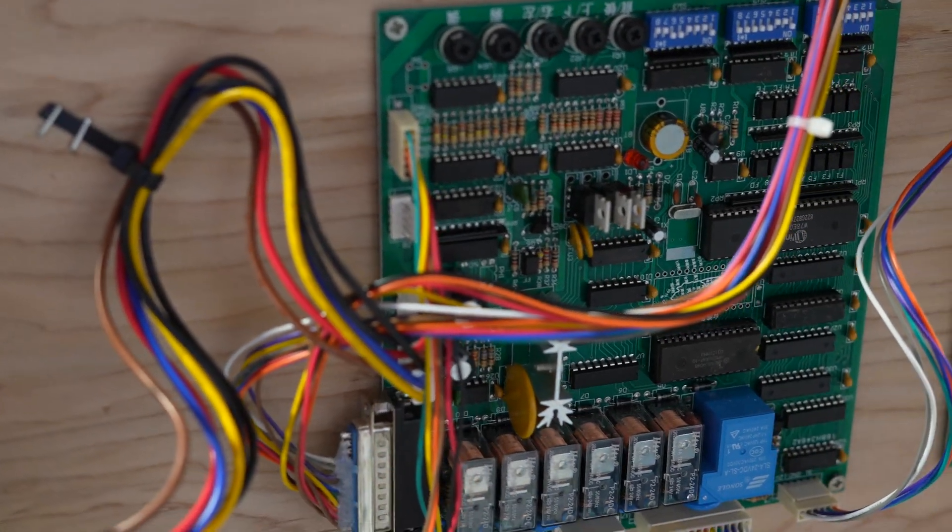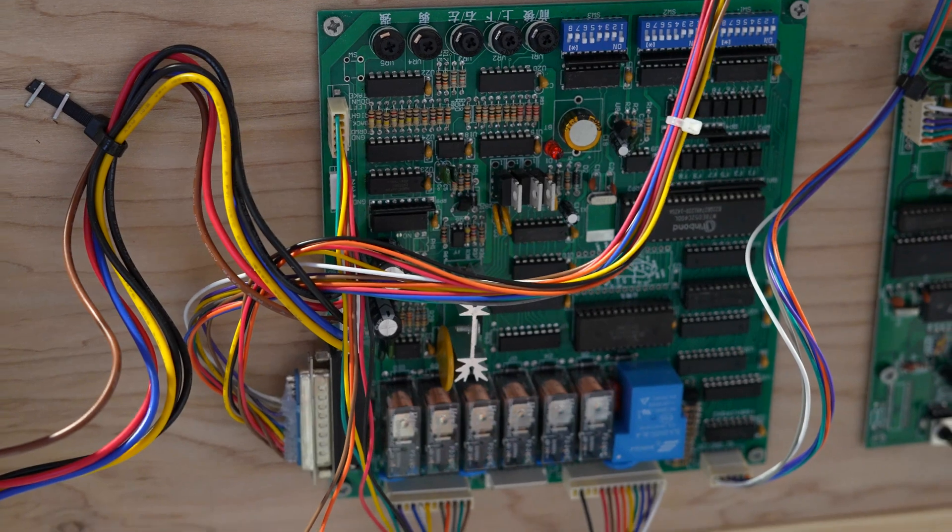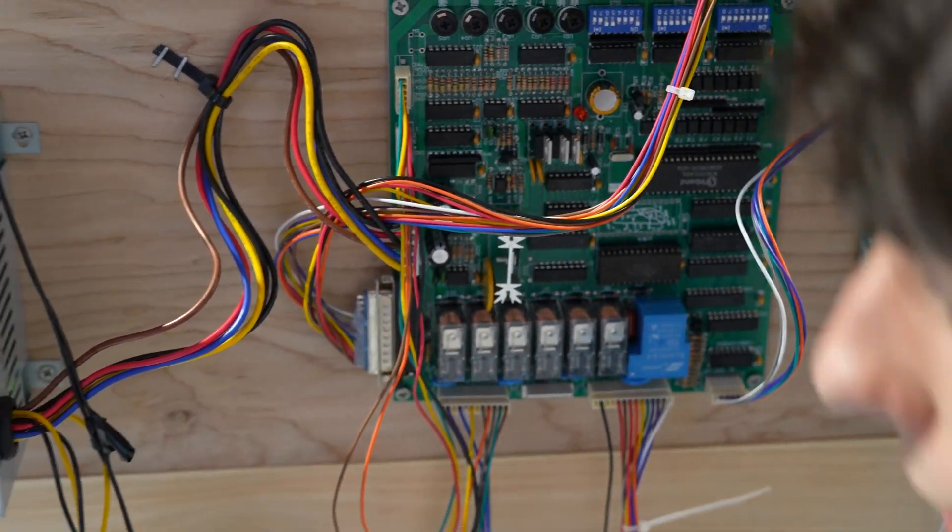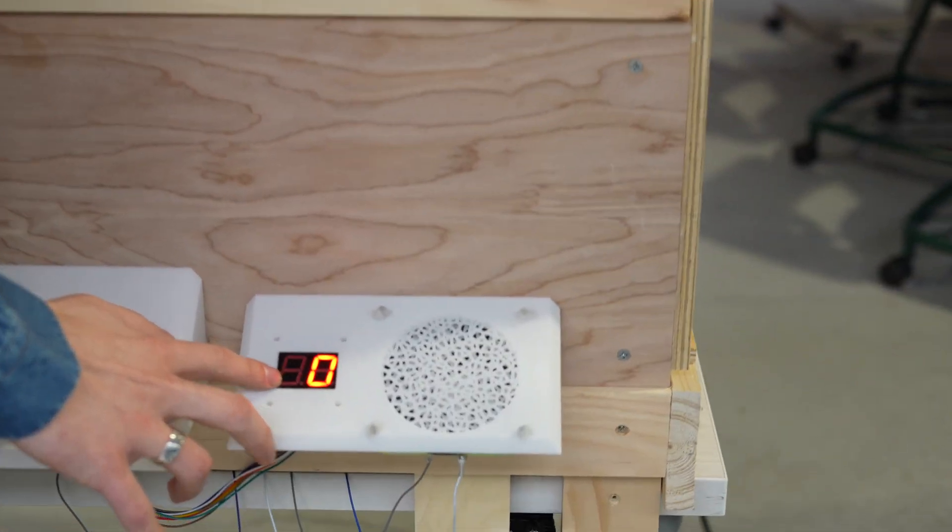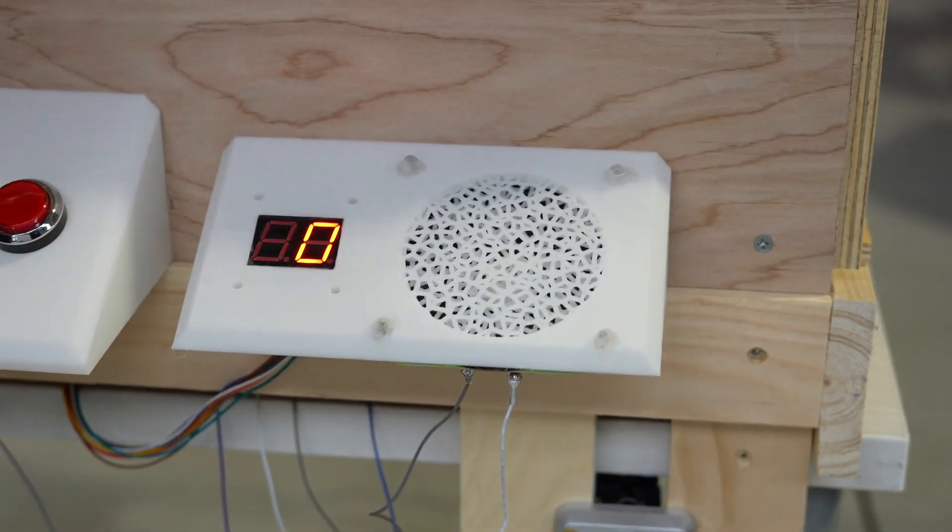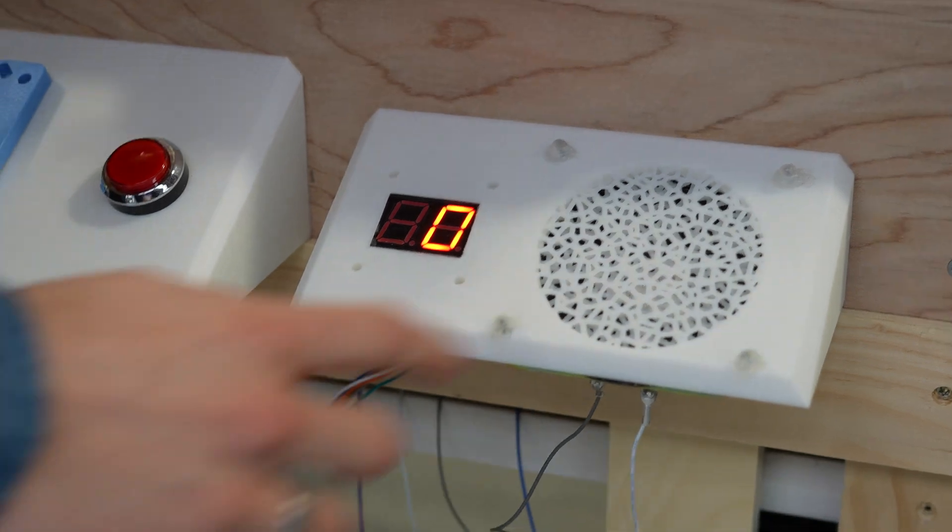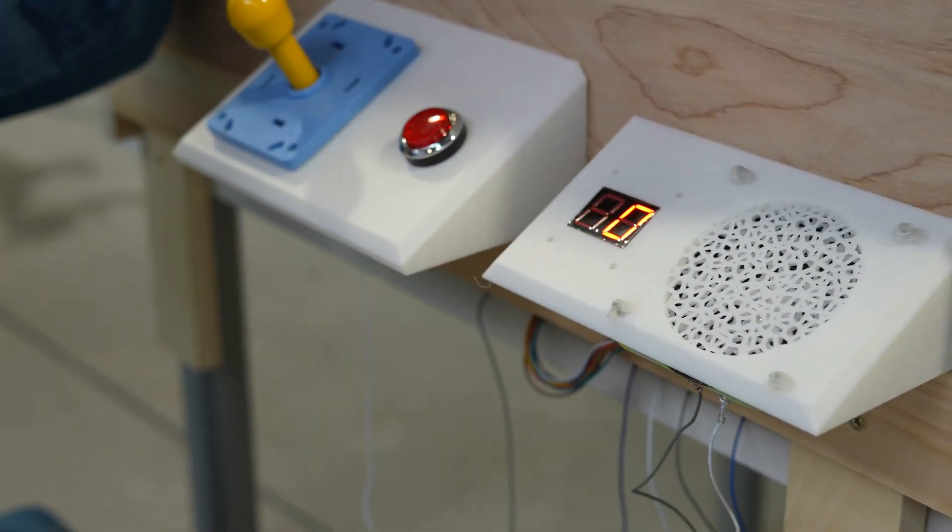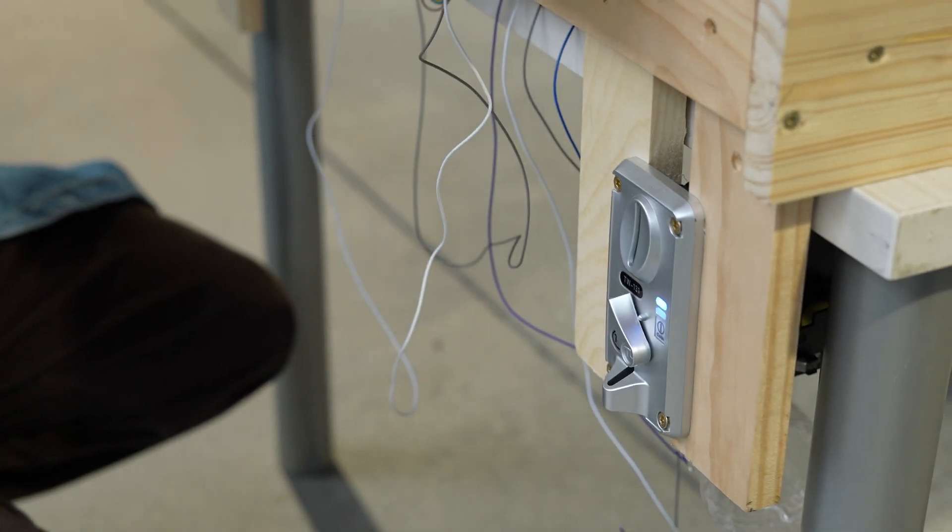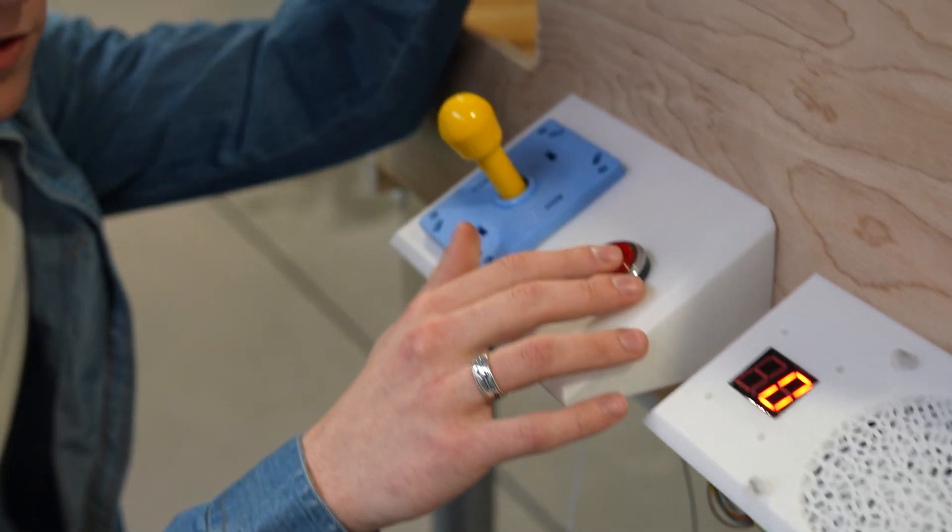So all of these wires lead up to the front where all of the user facing panels are located. Let's take a look at this. So this is the LED sign that I was talking about before. You can see right now it just says zero. Under here is the speaker. This is the coin comparator. Here obviously is our joystick and here is our button.